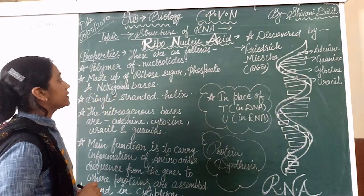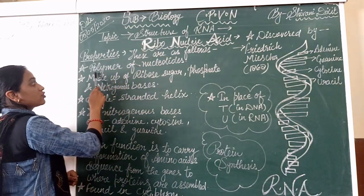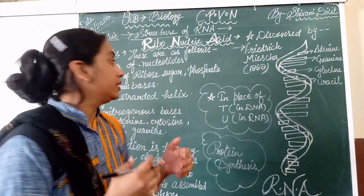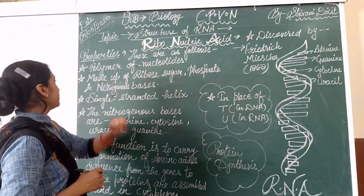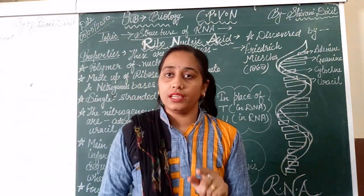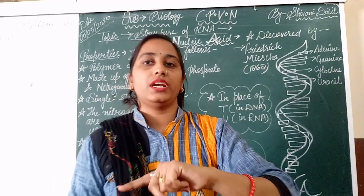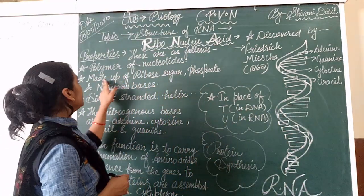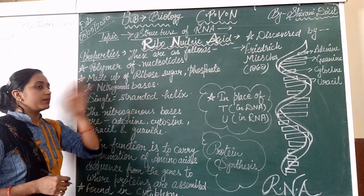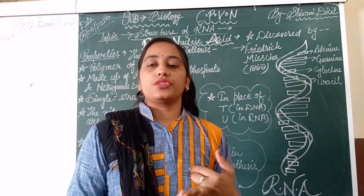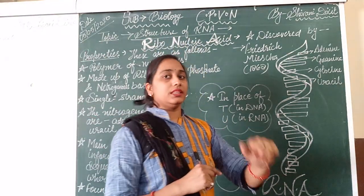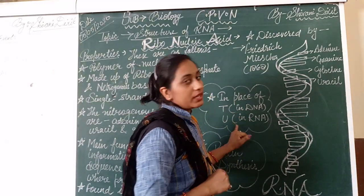RNA is actually a polymer — polymer means made up of many monomers — specifically a polymer of nucleotides. RNA is made up of ribose sugar. DNA is made up of pentose sugar and RNA is made up of ribose sugar. In RNA, ribose sugar is combined with phosphate and nitrogenous bases.